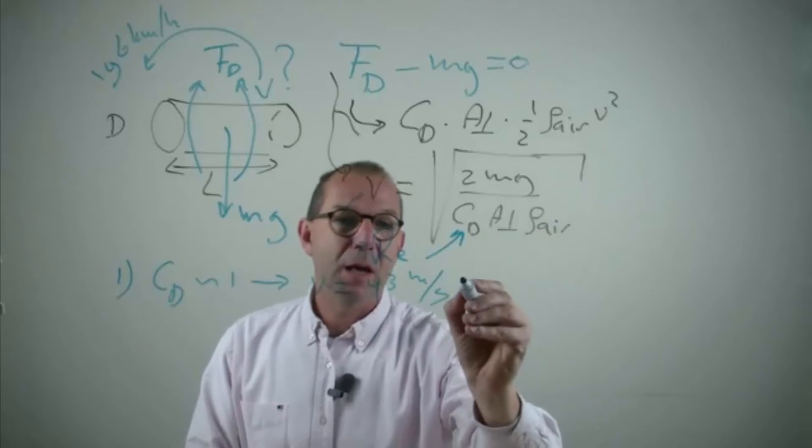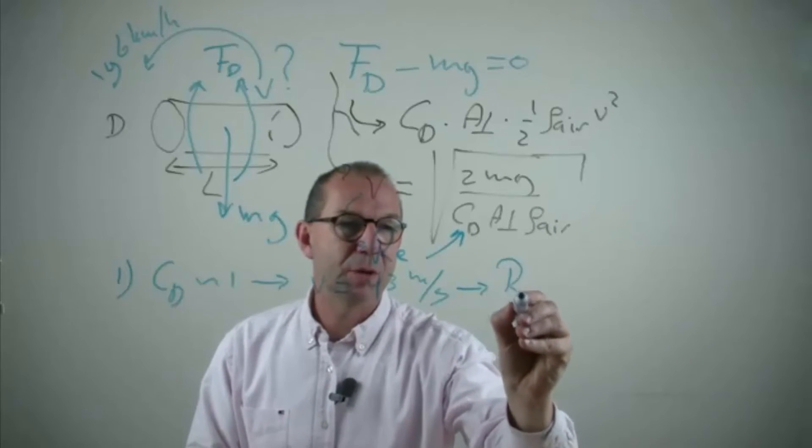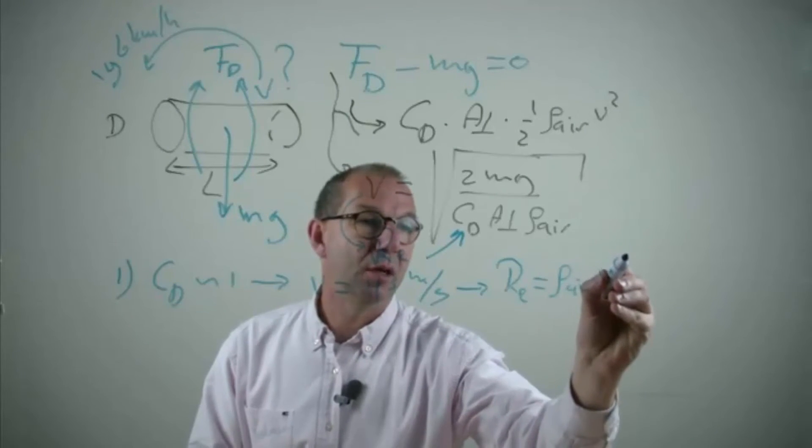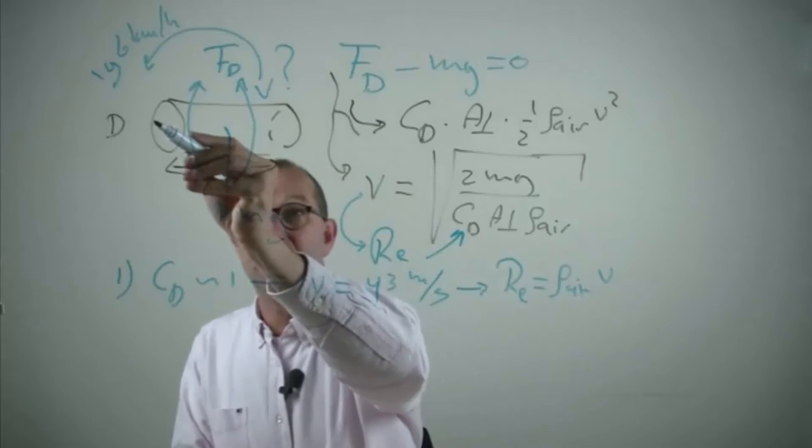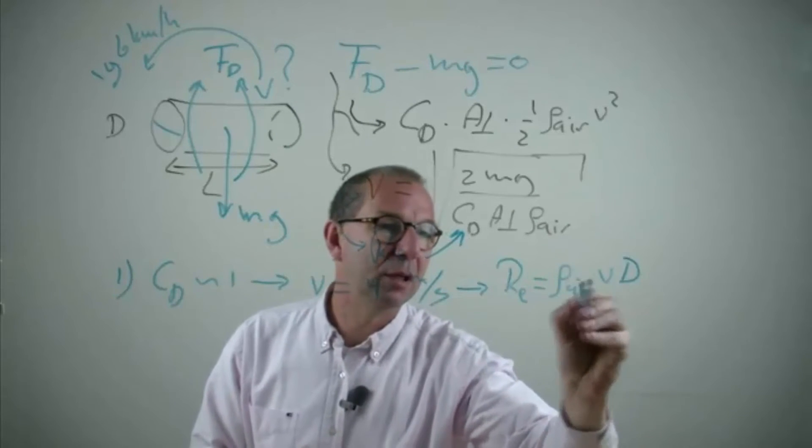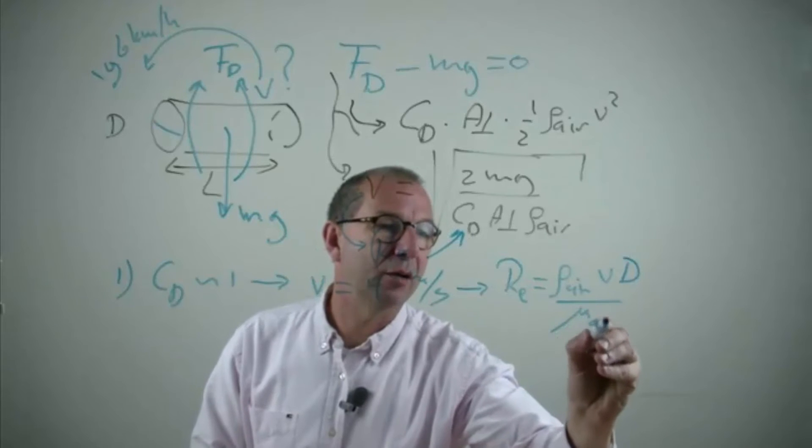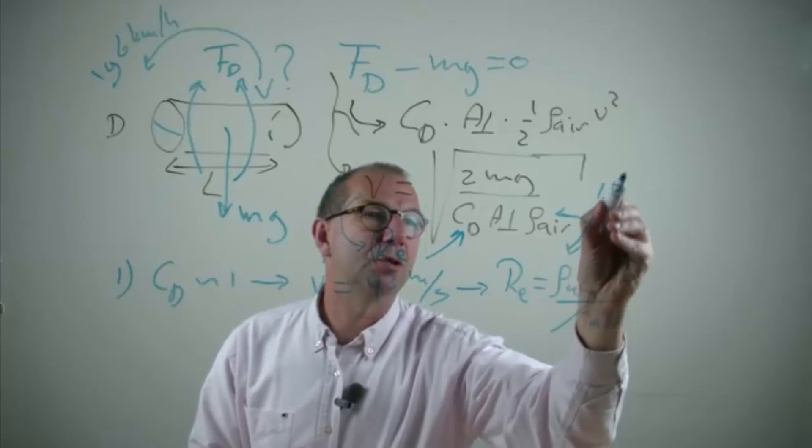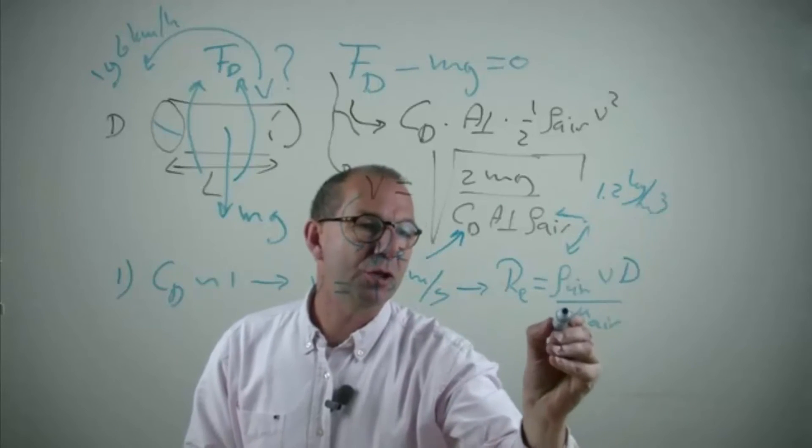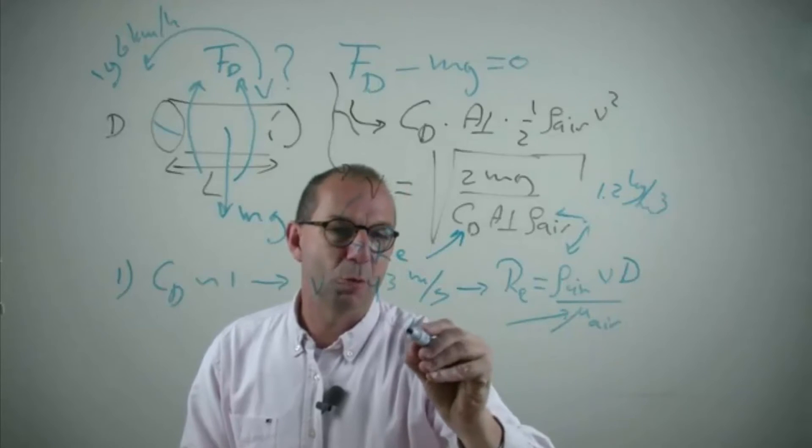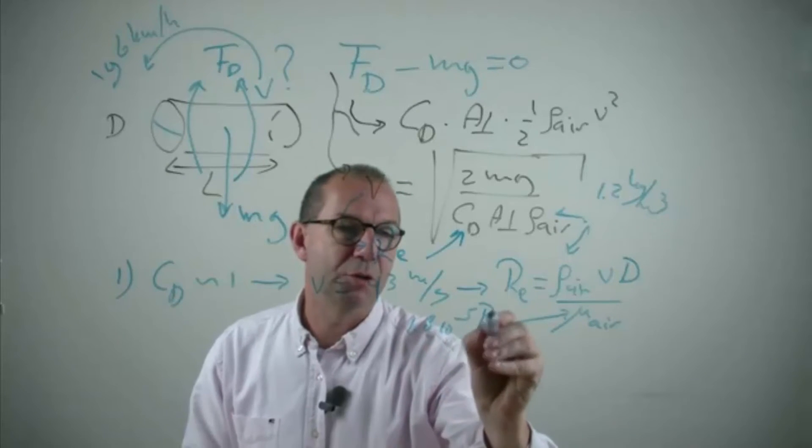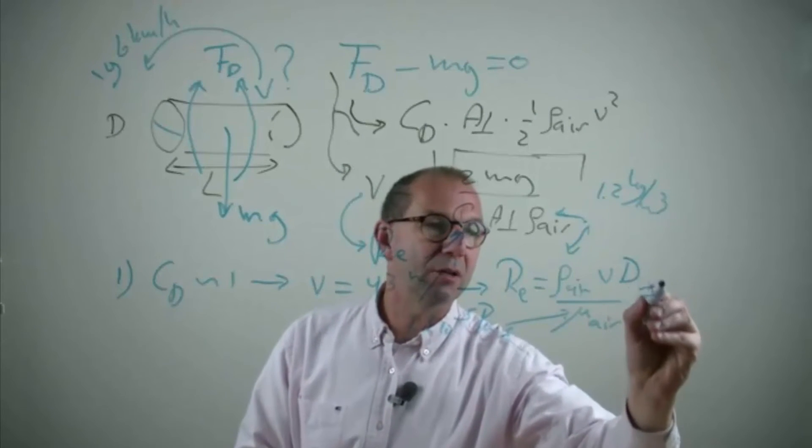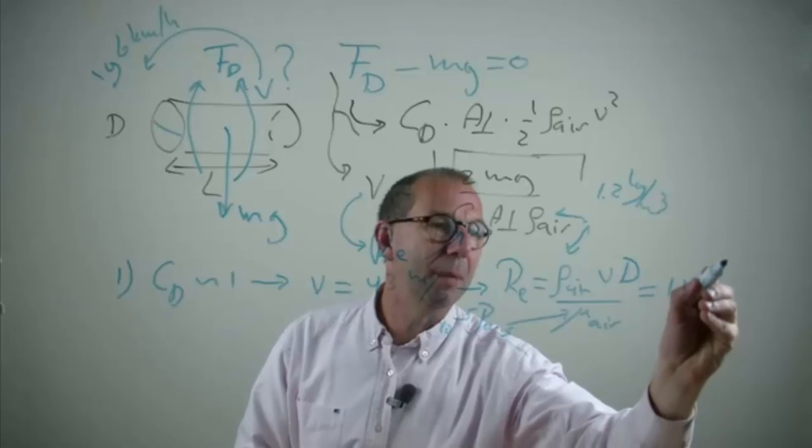Out of that we can compute the Reynolds number which is rho air, velocity of the air, a length scale which is the diameter of the cylinder over the viscosity of air. This is 1.2 kg per cube, viscosity of air if you look that up is 1.8, 10 to the minus 5 units is Pascal times a second. So I can compute the Reynolds number 1.1 million.